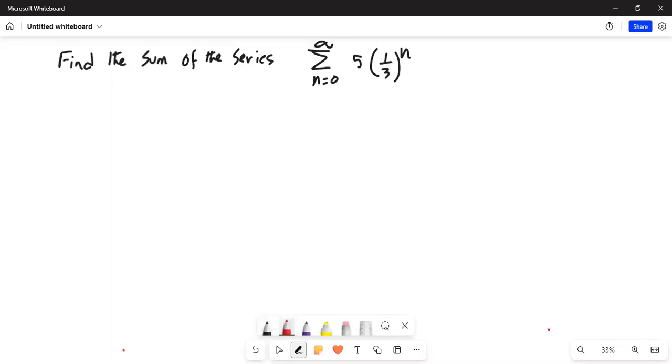It says find the sum of the series from n equal to 0 to n equal to infinity. So, let us make sure that is an infinity sign.